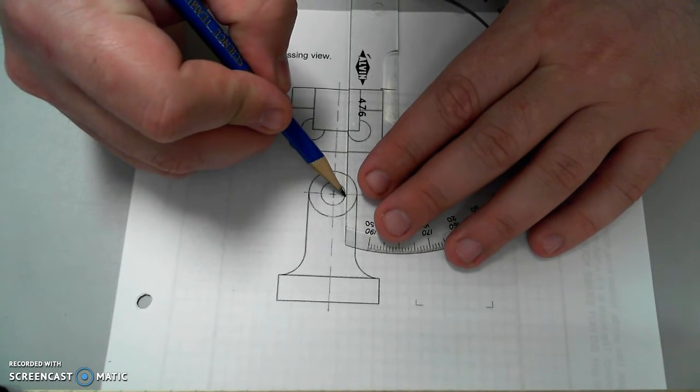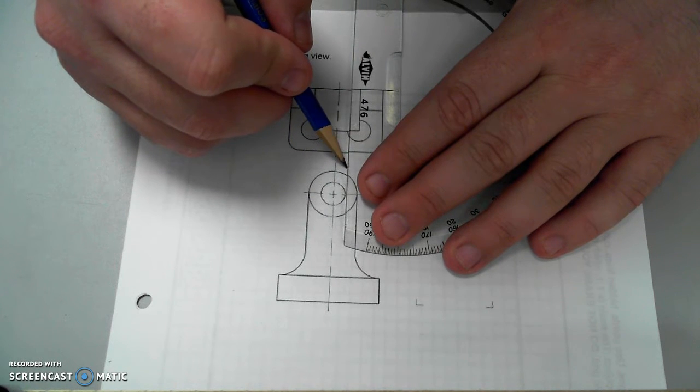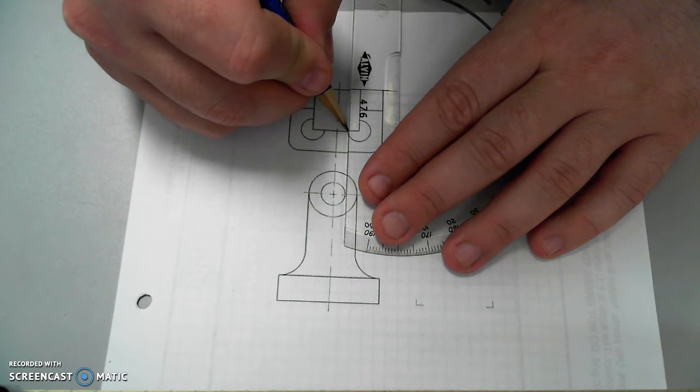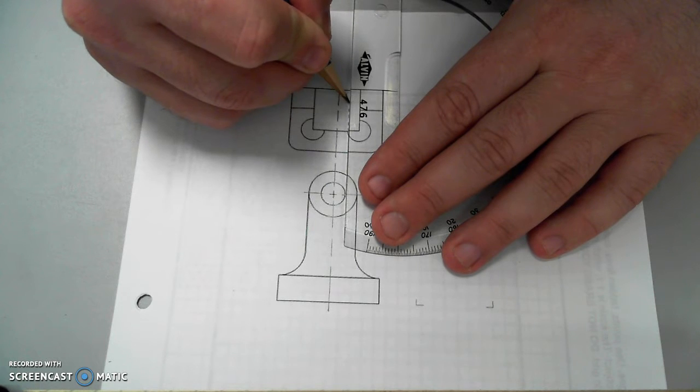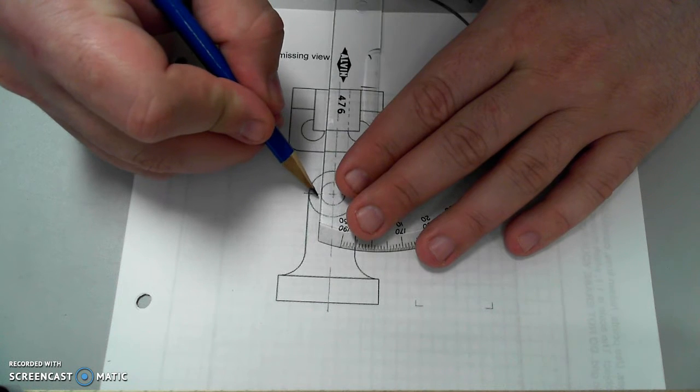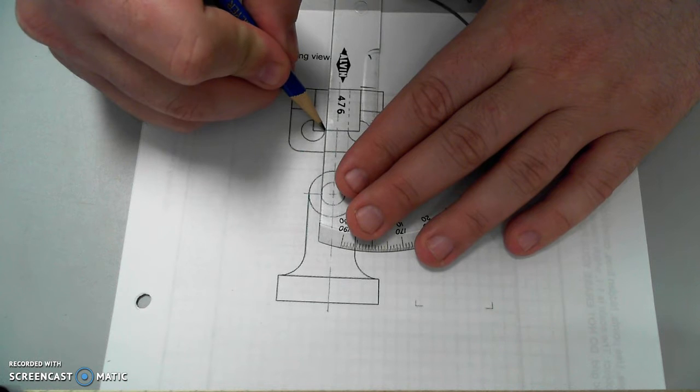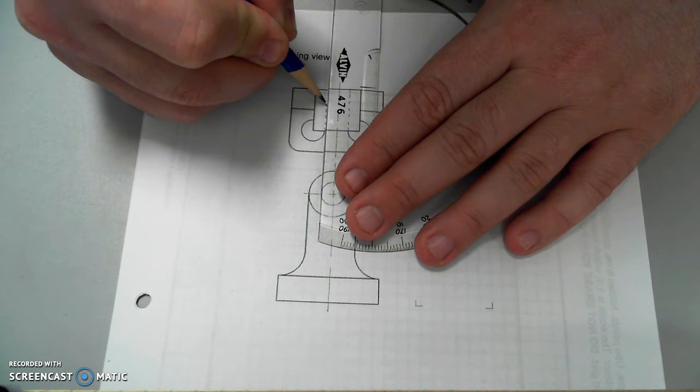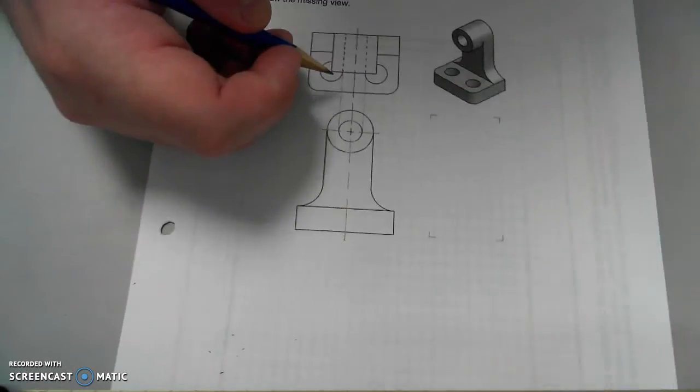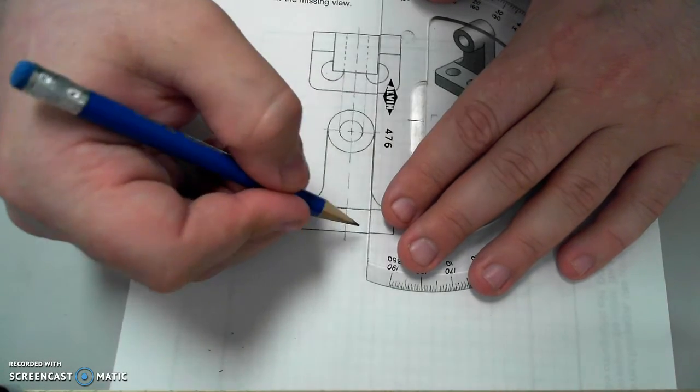they also do not project any of their holes. This would have a projection here on the hidden line to represent the right edge of the hole through this cylindrical feature. And then here, or the left edge of the hole.